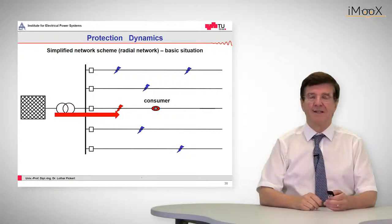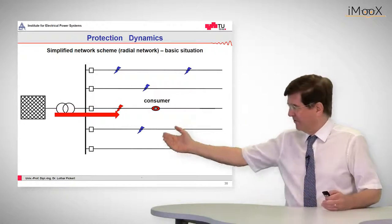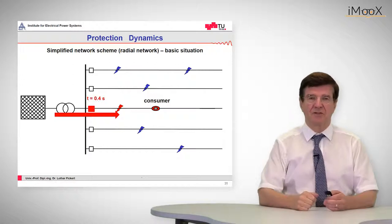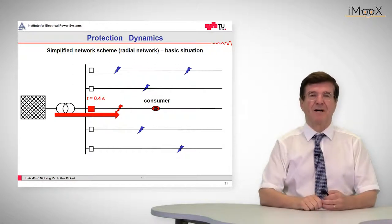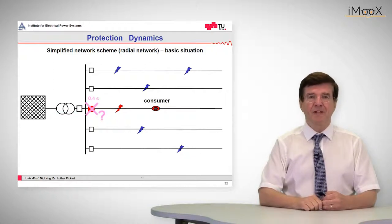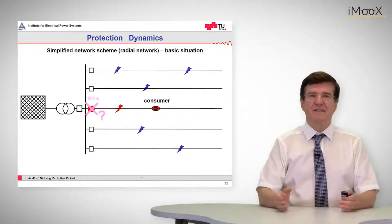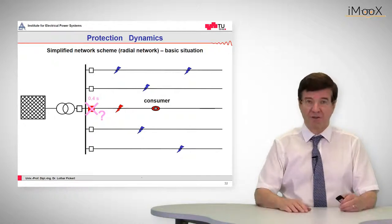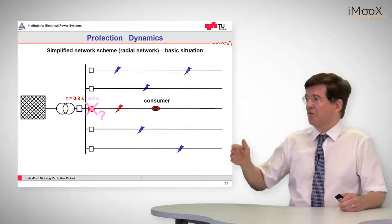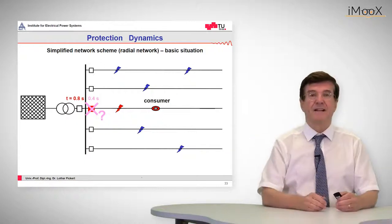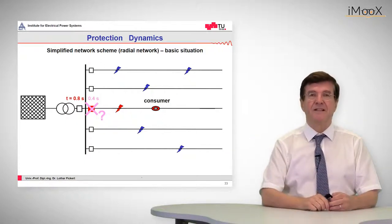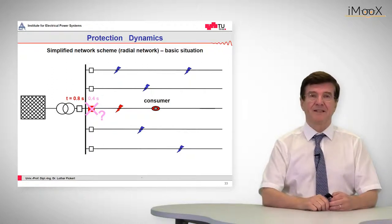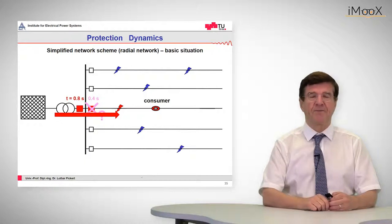Now a short circuit comes in and the short circuit current is flowing from the source to the fault and the relay will pick up after example 0.4 seconds. Now what happens if for whatever reason the trip does not occur? That means after 0.4 seconds the current keeps on flowing, flowing until, and now you see what has been inserted, another upstream relay with a grading time of 0.8 seconds will pick up and interrupt the fault.